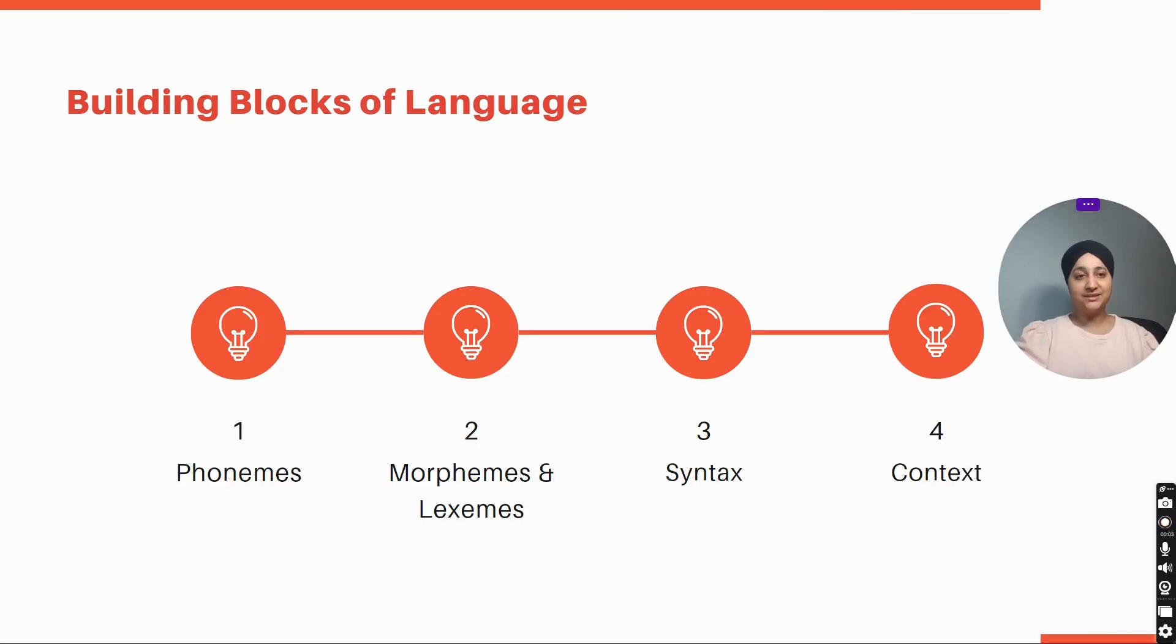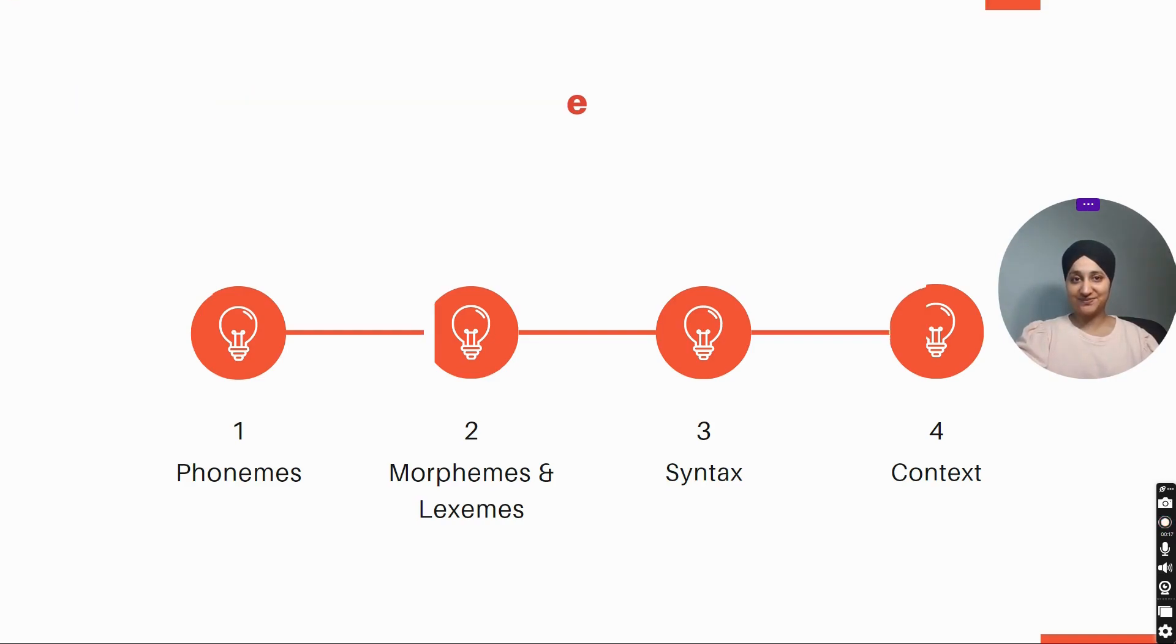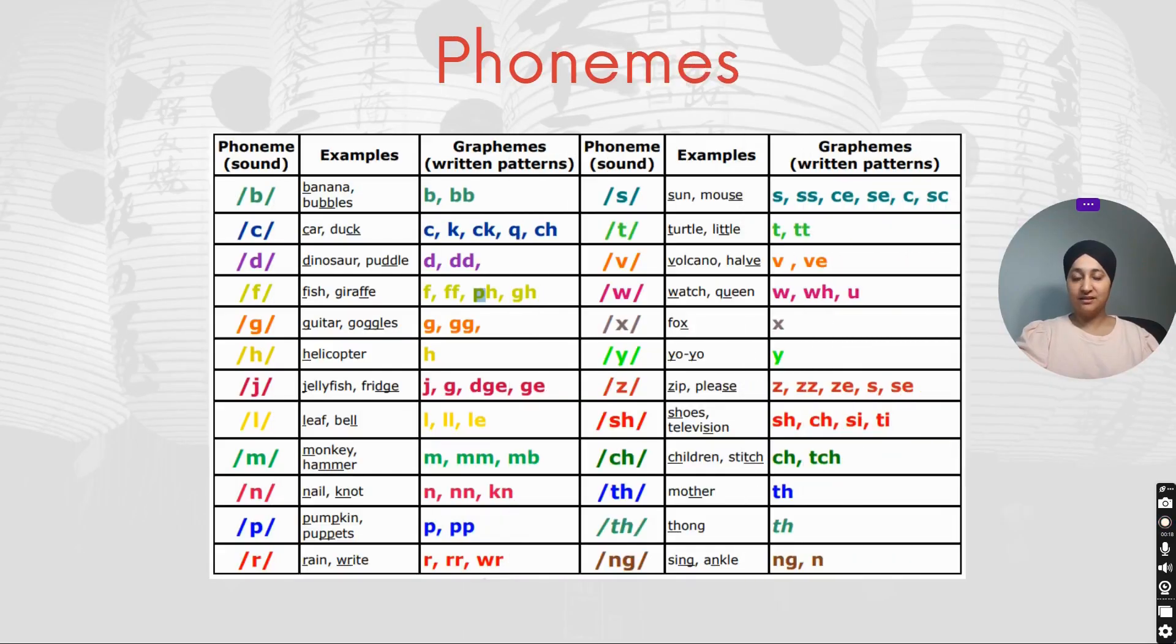In this tutorial we are going to study building blocks of language which are used in Natural Language Processing. First one is phonemes, second is morphemes and lexemes, third is syntax, and fourth is context. Phonemes: a phoneme is a sound.